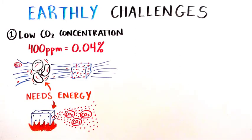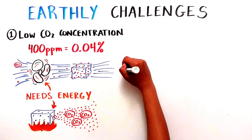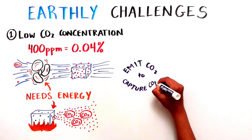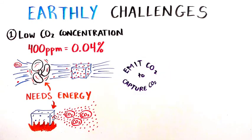Unless the direct air capture unit can be powered by a clean energy source, like solar power, it would emit CO2 in order to capture CO2, which defeats the purpose.